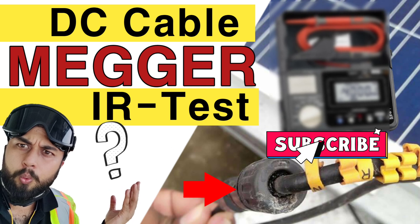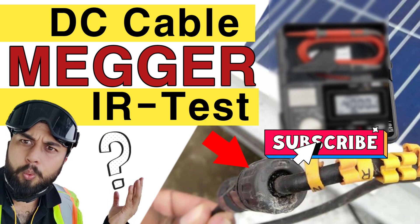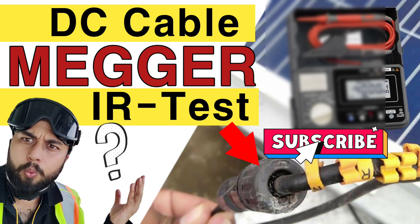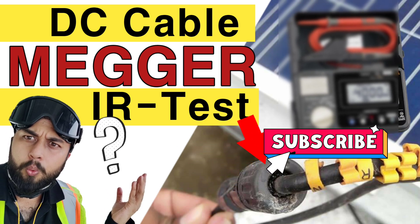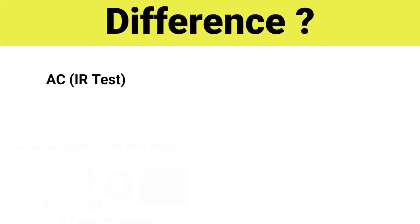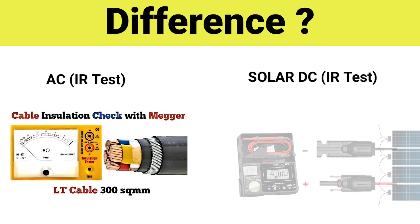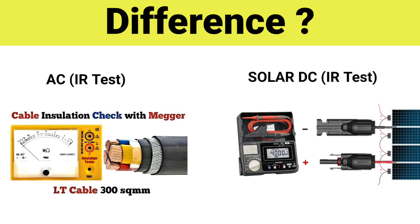There is a lot of confusion when it comes to performing an insulation resistance test of a solar module string connected in series — like what is the difference between a normal AC cable insulation resistance test or a solar DC string insulation resistance test.